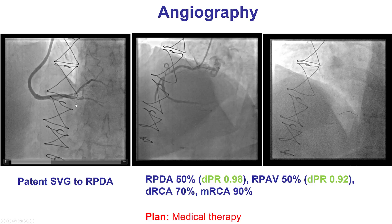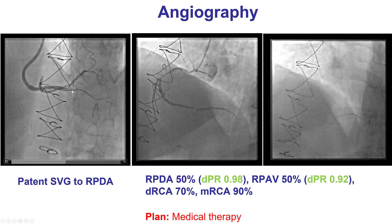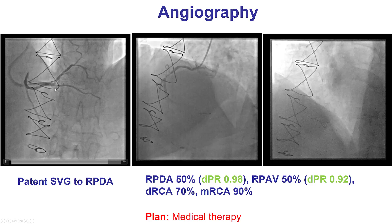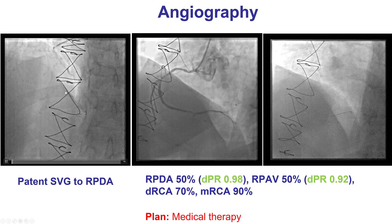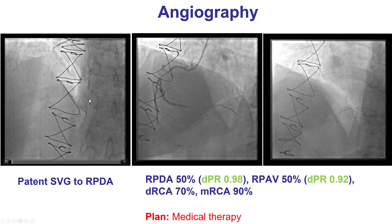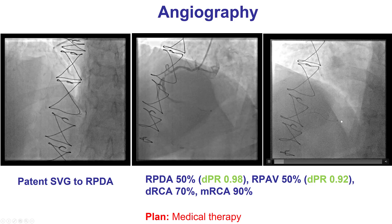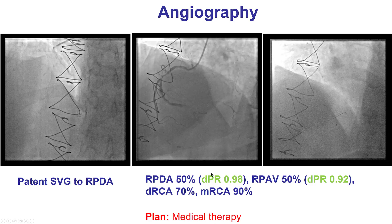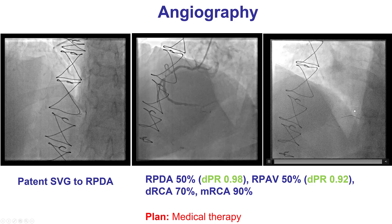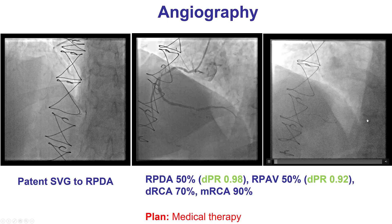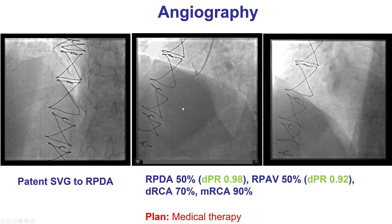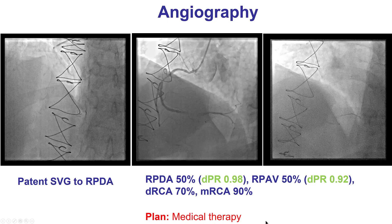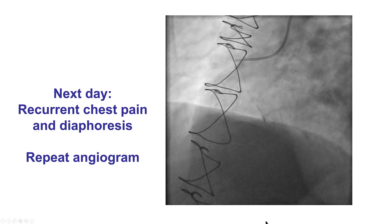There appeared to be lesions both distal and proximal to the vein graft touchdown that we considered as potential culprits for the patient's symptoms. However, when we performed physiologic assessment, the DPR in the posterior lateral was 0.98, and the FFR on the PDA was 0.92. Therefore, we decided to not perform an intervention.